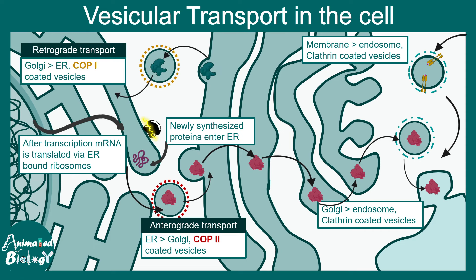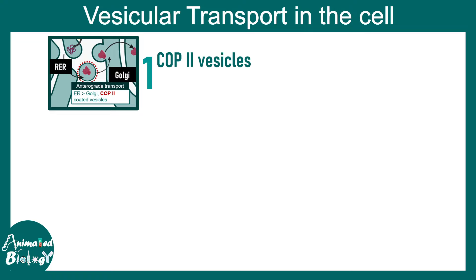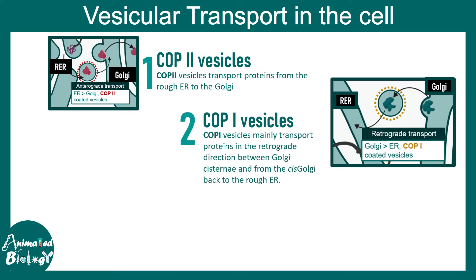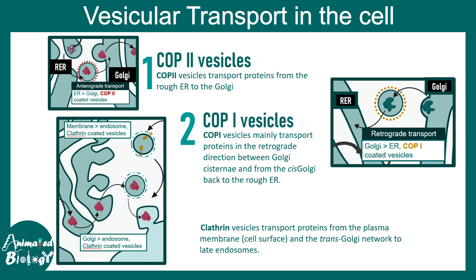There are another kind of vesicles which are COP1 coated vesicles, and these mediate retrograde transport from the cis-Golgi to the endoplasmic reticulum. Overall we talked about three major types: COP2 coated vesicles, which transport from the endoplasmic reticulum to the cis-Golgi; COP1 coated vesicles, which mediate retrograde transport from cis-Golgi back to the ER; and clathrin coated vesicles, which transport things from the plasma membrane to the endosome or from the trans-Golgi network to the endosome and many other routes.